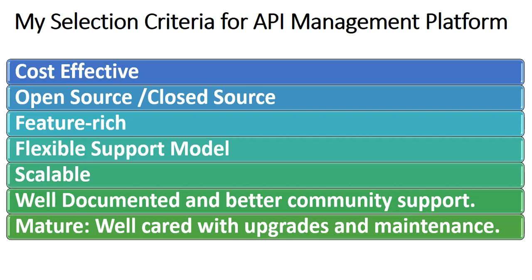When we talk about the maturity of any API management platform, this means the current version you are considering must have enough customers in the market — it should be something well tested and well tried by other parties. For example, if you are a telecom operator, you will always prefer an API management platform that has been tried, tested, and is in use by other telecom operators, because that gives you peace of mind that others have used it and are satisfied.